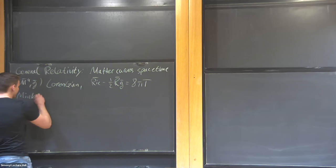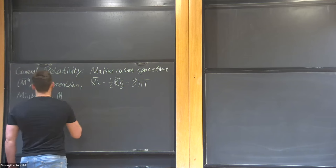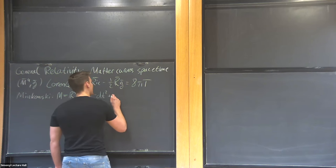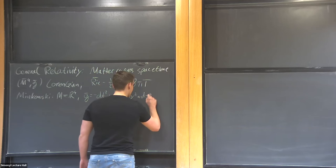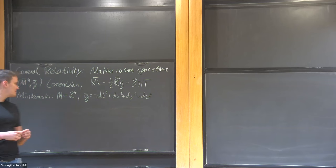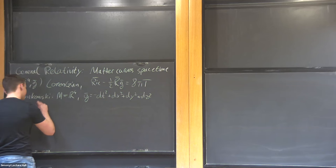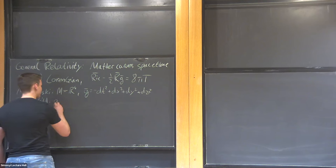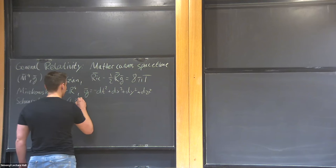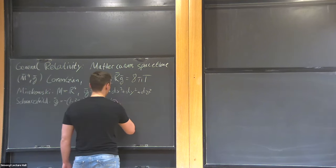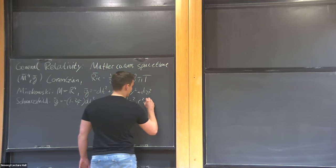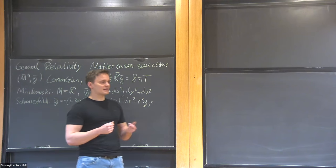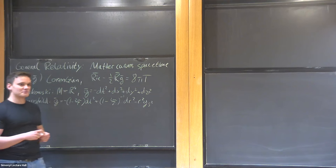Let's do some examples. We have Minkowski spacetime. In this case, the manifold M is just equal to R^4, and G-bar is just minus dt² plus dx² plus dy² plus dz². So basically you just have this additional minus sign in the law of Pythagoras. Then there's Schwarzschild, discovered just one year after the production of GR by Einstein. The metric takes the form of minus (1 - 2M/r) dt² plus (1 - 2M/r)^{-1} dr² plus r² times the round metric on S². This metric describes an isolated gravitational system like stars, galaxies, but also black holes, and the parameter M corresponds to the actual mass.